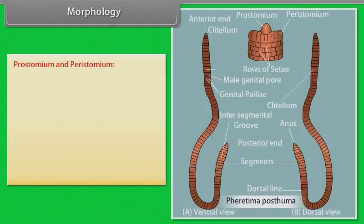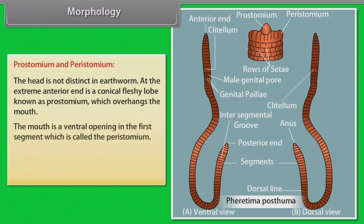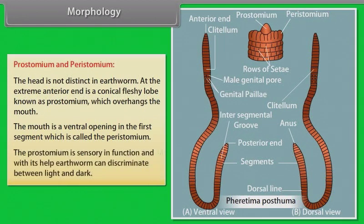Prostomium and Peristomium. The head is not distinct in earthworm. At the extreme anterior end is a conical fleshy lobe known as prostomium, which overhangs the mouth. The mouth is a ventral opening in the first segment, which is called the peristomium. The prostomium is sensory in function, and with its help, the earthworm can discriminate between light and dark.